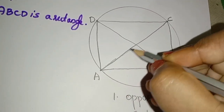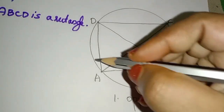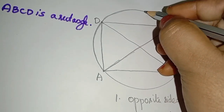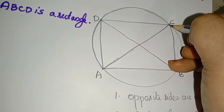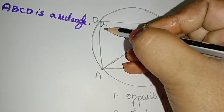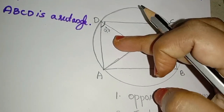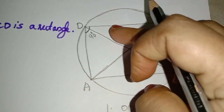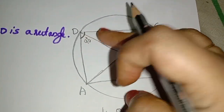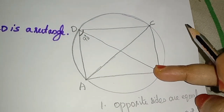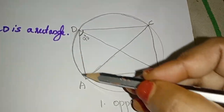The angle in a semicircle is 90 degrees. If we say that BD is the diameter, then arc BAD is a semicircle.